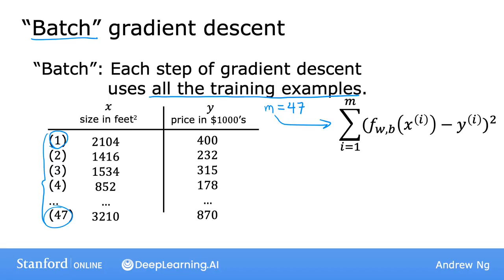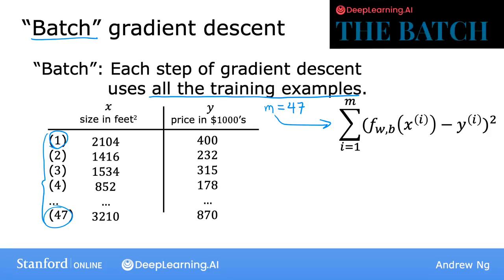I know that batch gradient descent may not be the most intuitive name, but this is what people in the machine learning community call it. If you've heard of the newsletter, The Batch, that's published by deeplearning.ai, the newsletter was also named for this concept in machine learning.